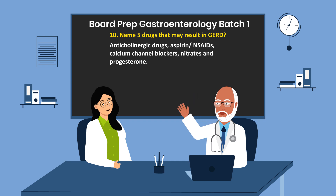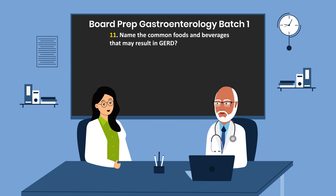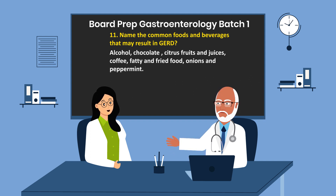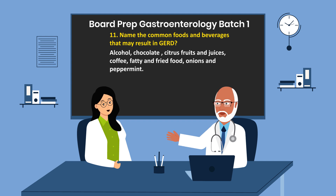Question 11. Name the common foods and beverages that may result in GERD. Alcohol, chocolate, citrus fruits and juices, coffee, fatty and fried food, onions, and peppermint.